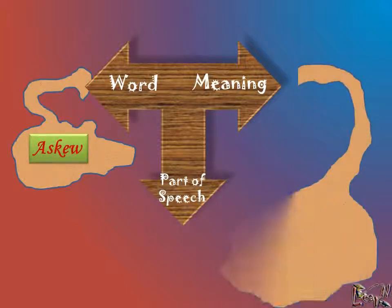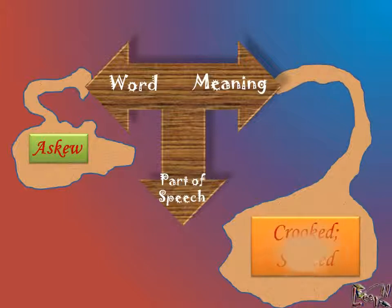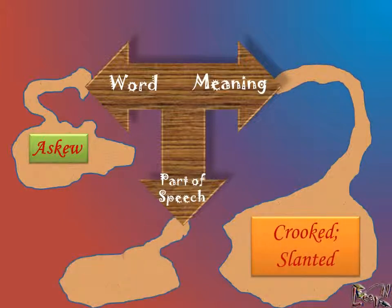Askew means crooked or slanted, and it's an adjective. We can learn this word with the help of a simple mnemonic: a crooked screw. Have a look at how askew and its meaning can be remembered from this mnemonic.